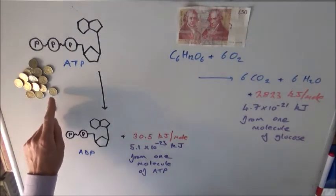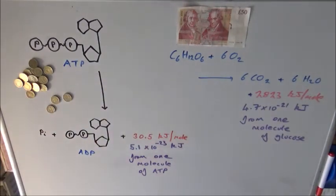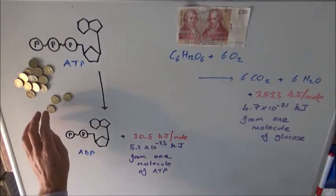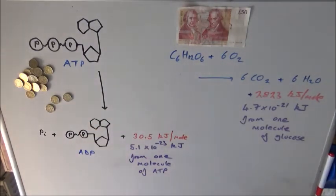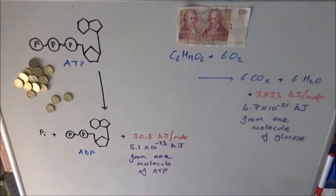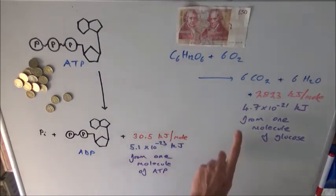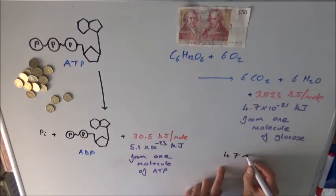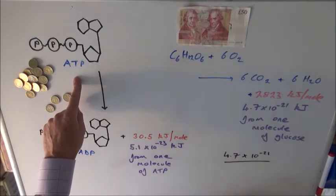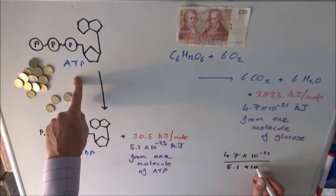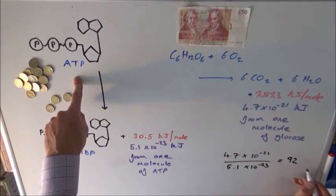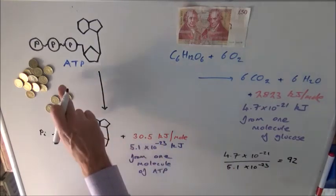Each ATP molecule releases a convenient, small amount of energy to the cell: a single molecule of ATP releases only 5.1 × 10⁻²³ kilojoules of energy, or 30.5 kilojoules per mole. Looking at the conversion: from one molecule of glucose you get 4.7 × 10⁻²¹ kilojoules, and each ATP stores 5.1 × 10⁻²³ kilojoules. That means in principle there is enough energy in one glucose molecule to make 92 ATPs.